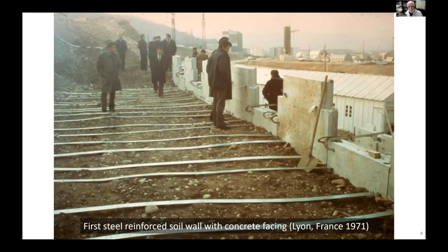One of the first steel reinforced walls was a wall constructed with steel strips that you can see here in this photograph, and a concrete facing. The purpose of the steel strips was to add strength and stiffness to the soil behind the concrete panels and to provide support to the concrete panels.